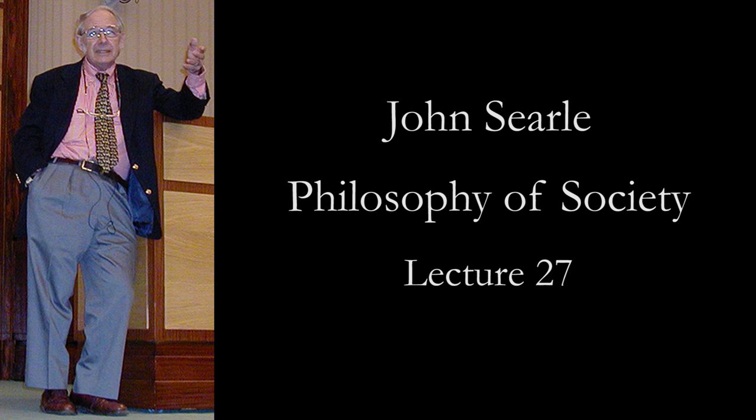Here's how it goes: I used to tell neurobiologists they need to give us a neurobiology of consciousness. A standard answer was: on your own account, consciousness is subjective, but science is objective, so there can't be a science of consciousness. That is a fallacy of ambiguity over the distinction between objectivity and subjectivity. Yes, consciousness is ontologically subjective, but that doesn't imply you can't have an epistemically objective science of consciousness. Ontological subjectivity of a domain does not preclude an epistemically objective science of that domain.